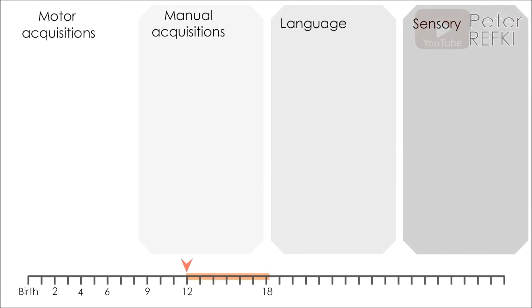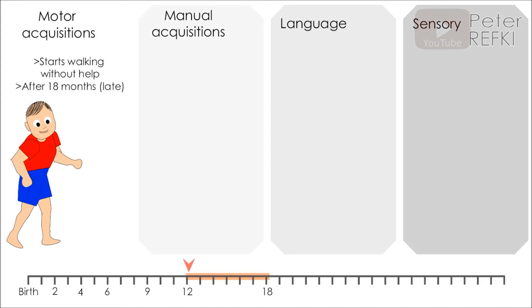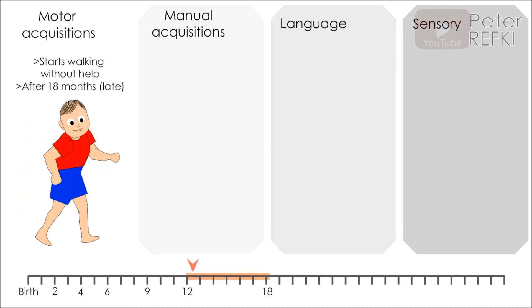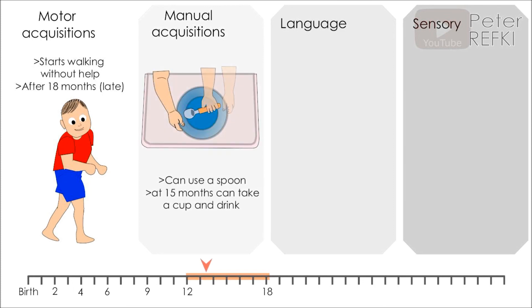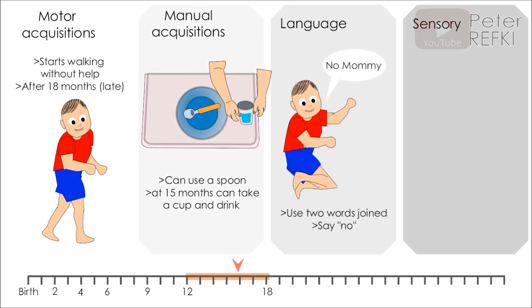At 12 to 18 months of age, the infant starts walking without help. After 18 months, it would be considered late. He can use a spoon, and at 15 months, he can take a cup and drink on his own. He is capable of using two words joined together and starts to say no, and he starts to play with other kids.